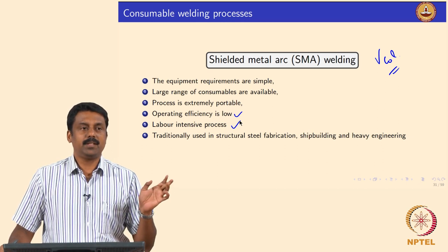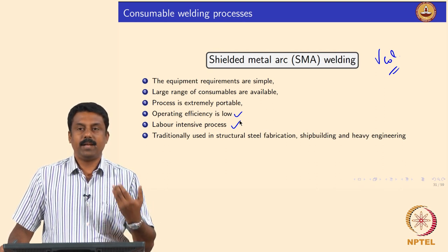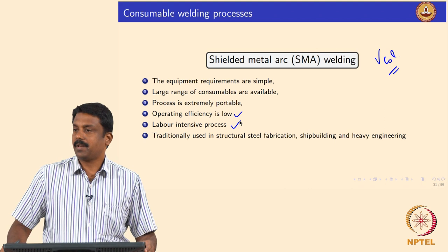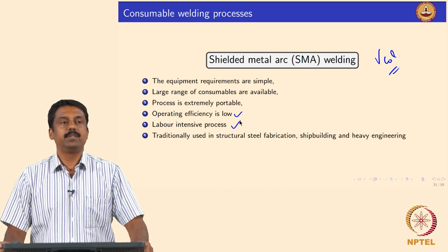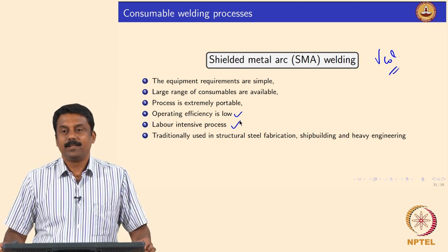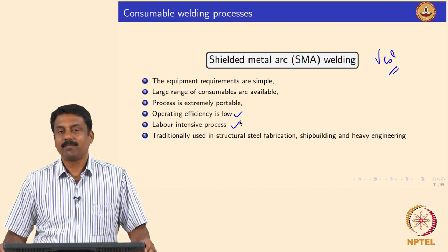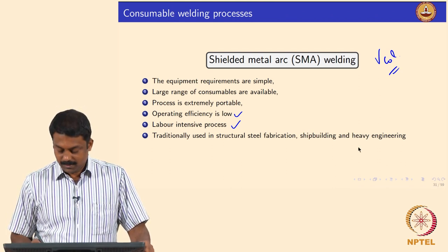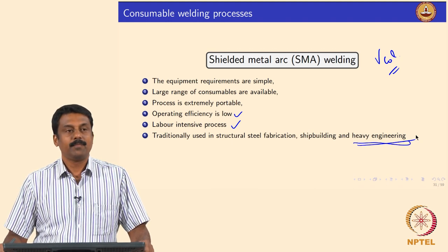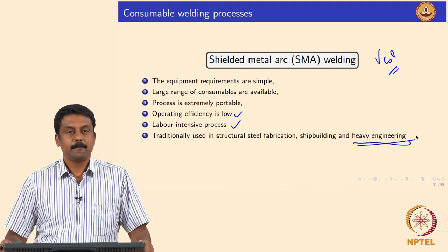SMAW is very widely used for structural fabrications — building bridges, constructing buildings, and shipbuilding. In a typical ship you have kilometers of welds made by manual metal arc welding. It is also used for heavy engineering applications such as welding thicker sections in large movers.